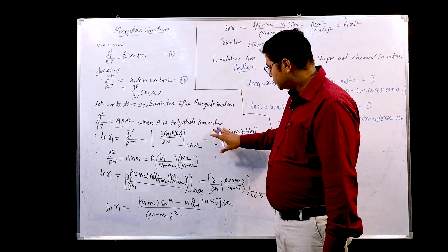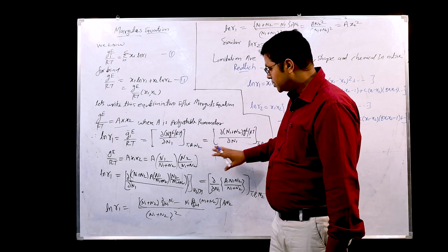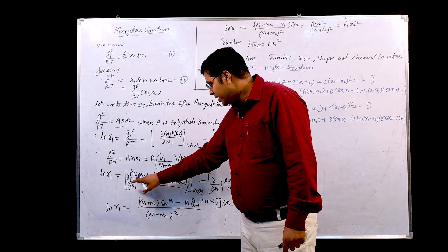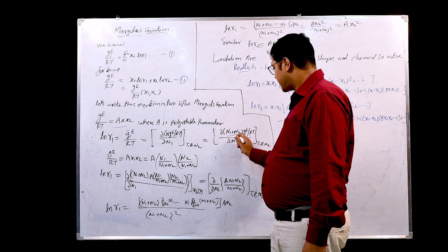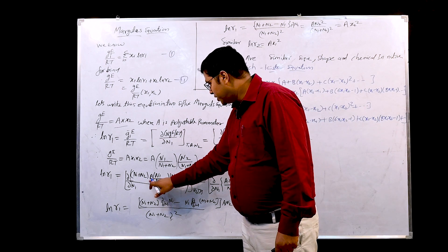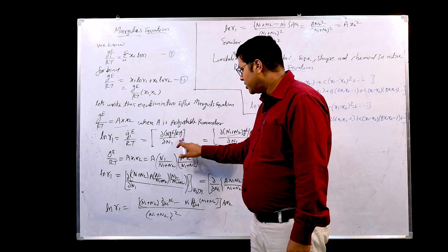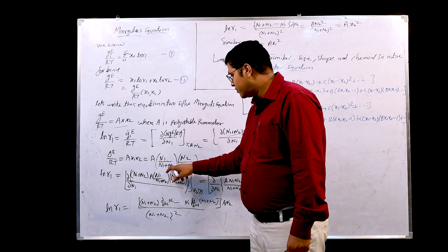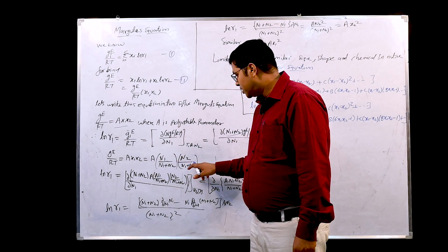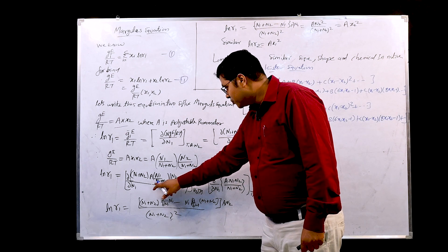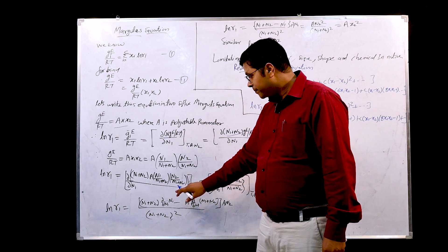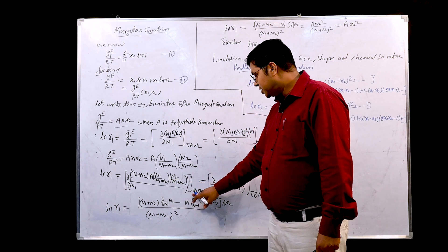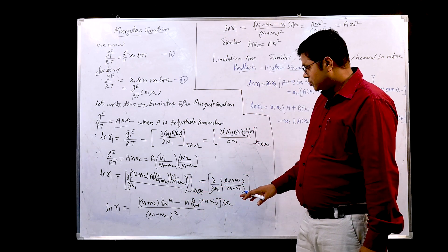When we insert the values of g_e/RT into this expression, the expression becomes d/d(n1) of (n1 + n2) into g_e/RT. g_e/RT is what? A x1 x2 or A n1/(n1 + n2) into n2/(n1 + n2). Both terms are written here: n1 upon n1 plus n2 into n2 upon n1 plus n2 where still temperature, pressure, n2 is the constant.